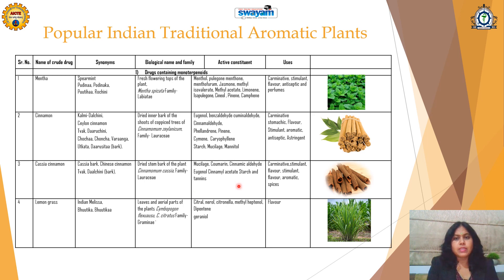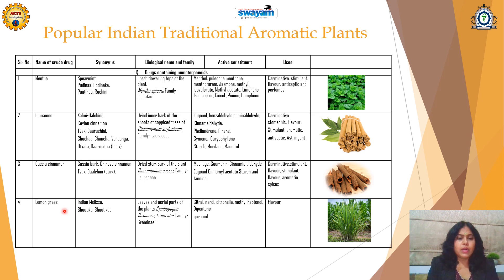Cassia is also used as a carminative, stimulant, flavorant, and aromatic. Next drug is Lemongrass, which is called as Indian Melissa or Bhutika. In Marathi it is called as Gauti Chaha.